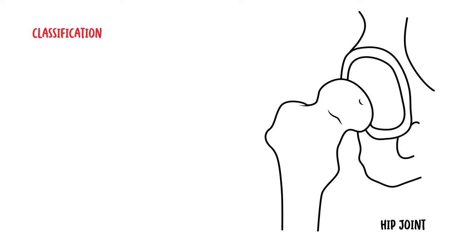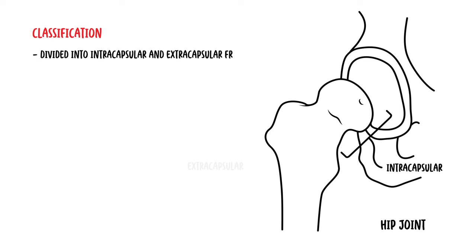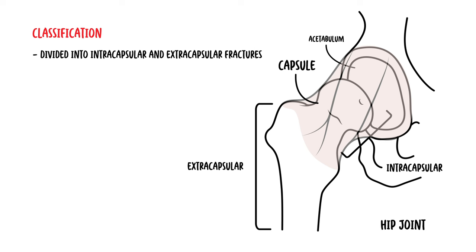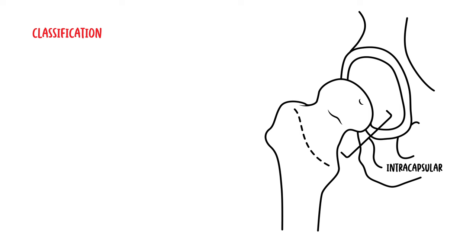Let's first talk about classification. Neck of femur fractures should be described anatomically. They are divided into intracapsular fractures and extracapsular fractures. The capsule is a strong fibrous material lined internally by the synovial membrane. The fibrous layer on the outside of the capsule is attached to the acetabulum proximally, and distally it attaches to the intertrochanteric line anteriorly.